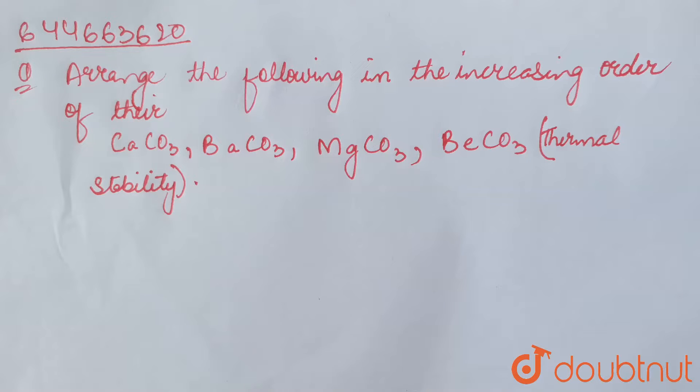Arrange the following in the increasing order of their thermal stability: CaCO₃, BaCO₃, MgCO₃, BeCO₃. In the given question, we need to arrange the given carbonates in the increasing order of their thermal stability.